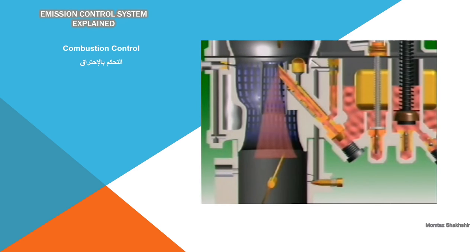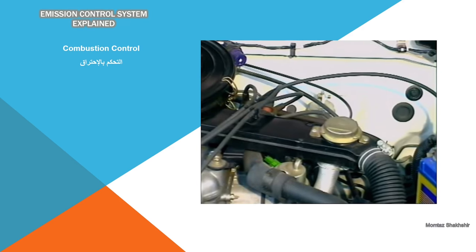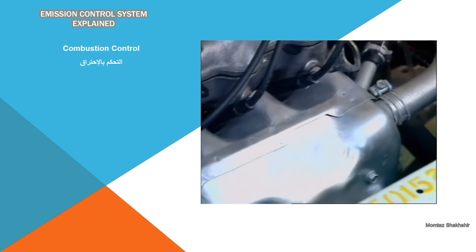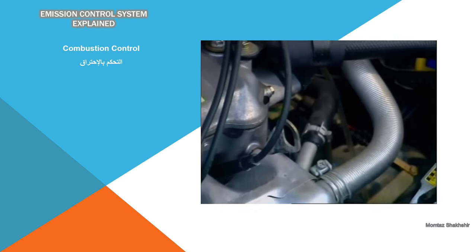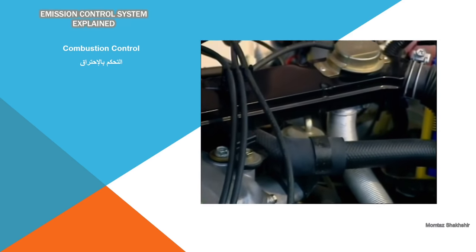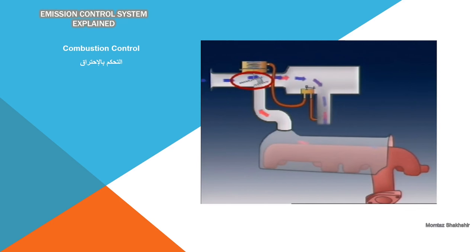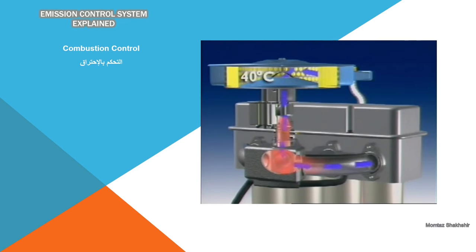Carburetors meet emission standards by maintaining accurate mixture control over a full range of engine conditions. To achieve this, most carburetors require an air supply at constant temperature. A heated air inlet system uses hot air collected from near the exhaust manifold and mixes it with outside air. One control system uses a temperature-sensitive valve inside the air cleaner that operates a flap to blend hot air with cool air, so that the carburetor receives air at about 40 degrees Celsius regardless of outside air temperature. This assists vaporization of the fuel, particularly when the engine is cold.